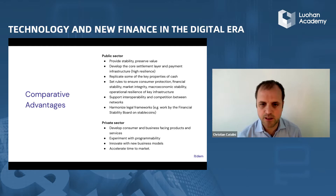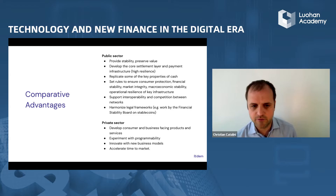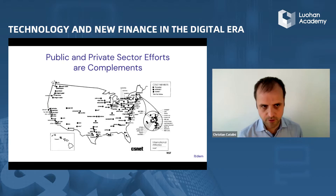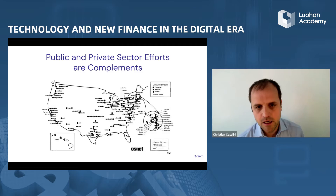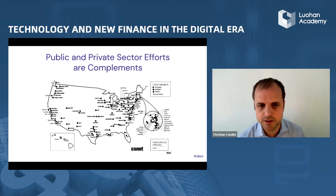On the private sector side, this is where being able to develop the consumer and business-facing products and experiences is one where the private sector can move much faster. Experimenting with programmability is also something that a CBDC token may have a hard time doing given the risk involved, and also really accelerating time to market. Going back to the picture of the early internet, this is an era where public and private sectors are actually complements. Countries that are interested in accelerating their journey should explore these combinations, given that on the other hand you do have more permissionless cryptocurrency networks that do not provide some of the same protections and are still growing at a very fast rate.